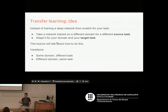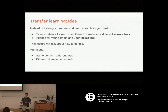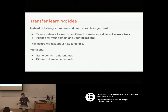There are some variations on this idea. You could have the same domain and a different task — for example, you care about images of flowers or trees, but one task is classifying species of flowers and the other is classifying types of trees. Or you could have a different domain and the same task, which is a little harder to explain, but you'll see what that means by the end of the lecture.